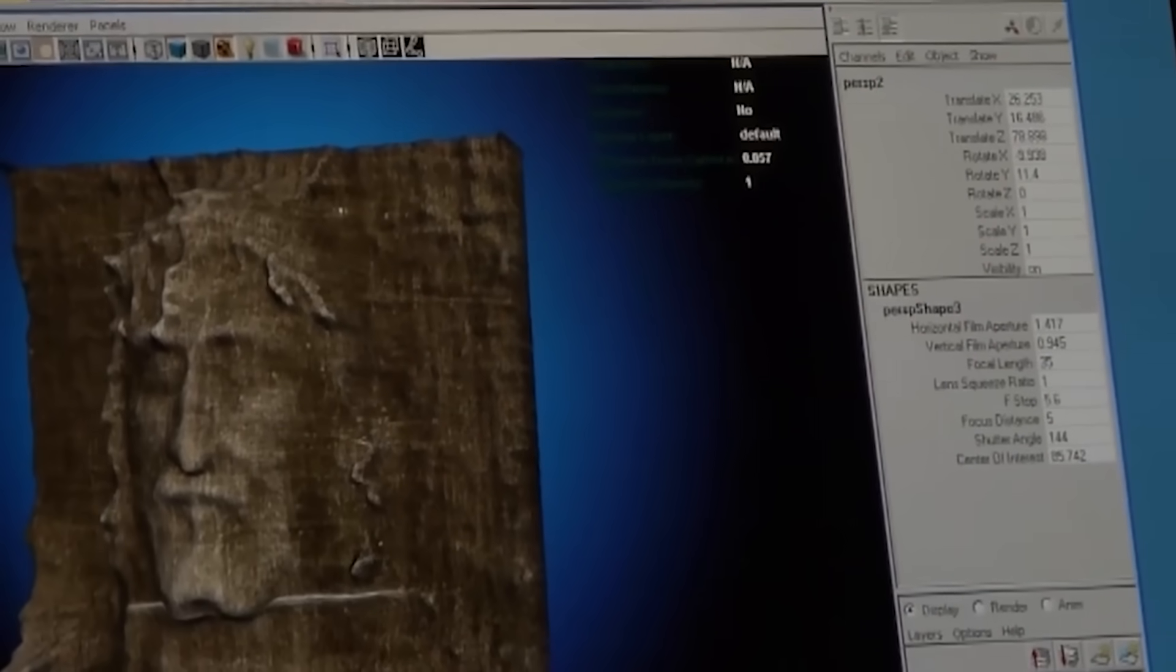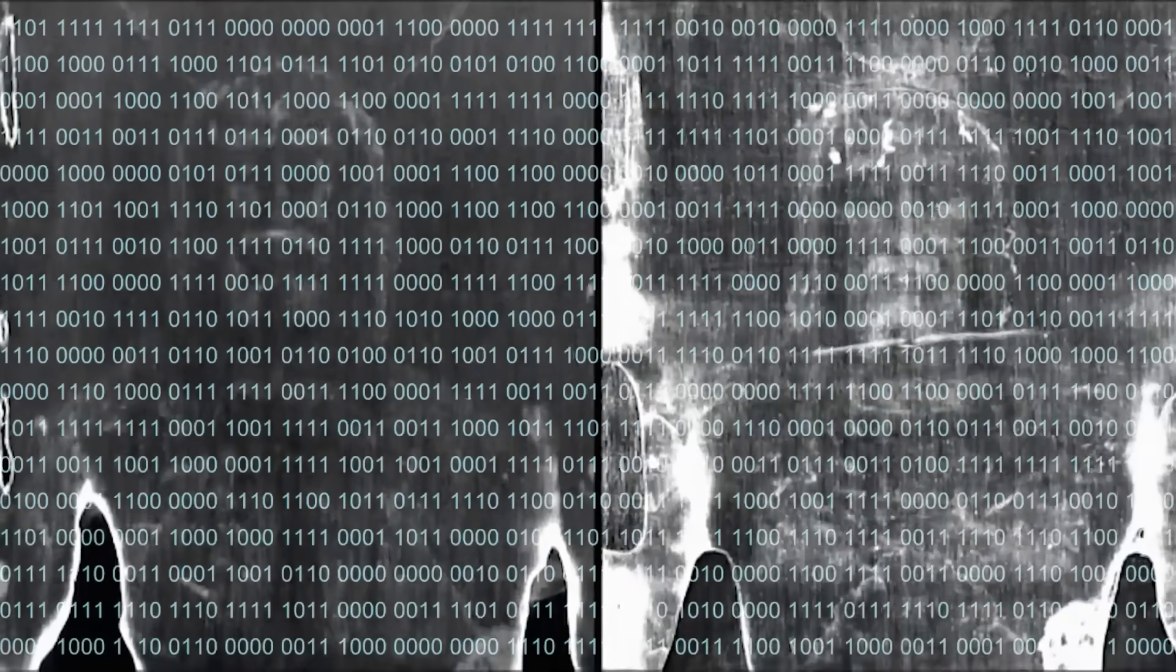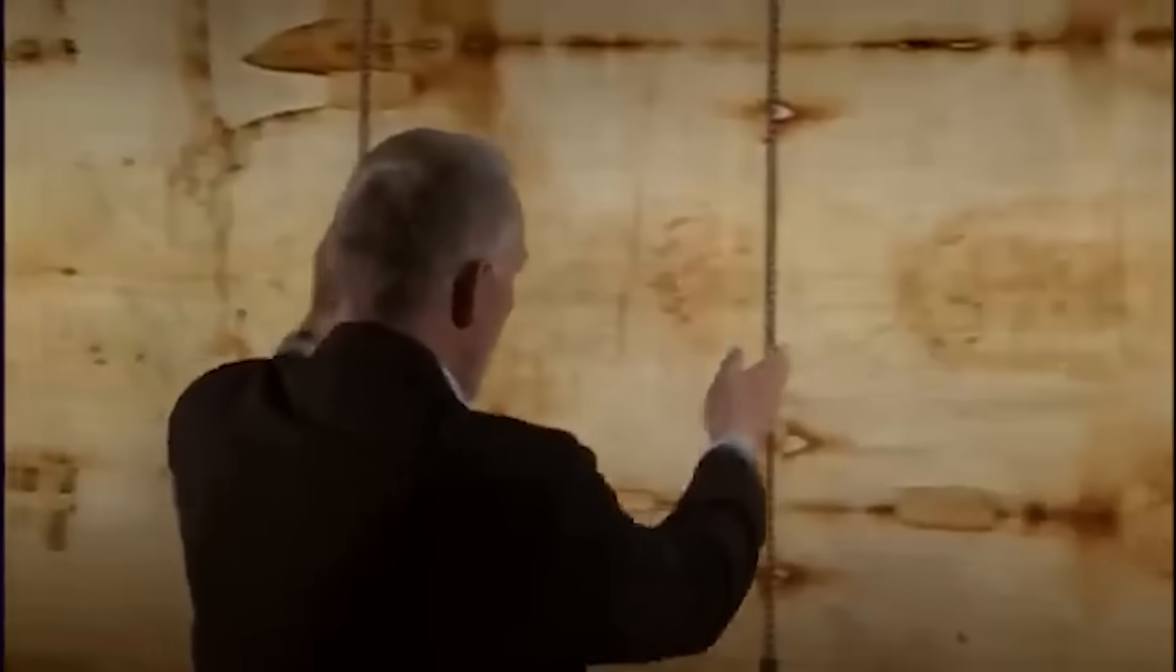This isn't just an image, it's a meticulously organized data set. The AI essentially confirmed the three-dimensional properties, but with far greater precision, showing a mathematical consistency that would be almost impossible for any forger to achieve. More than that,